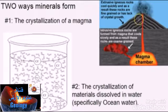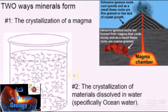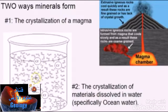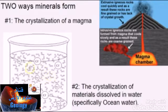A second way in which minerals form is through the crystallization of materials dissolved in water. Think about ocean water — it has a lot of salt, NaCl. You get ions that are free-floating, equally distributed within the water. Once we remove the water, the NaCl recombines and crystallizes into what we know as salt.